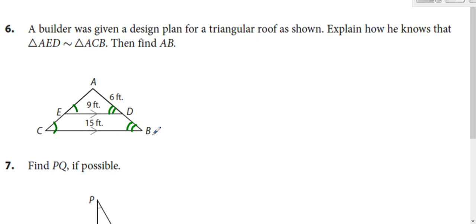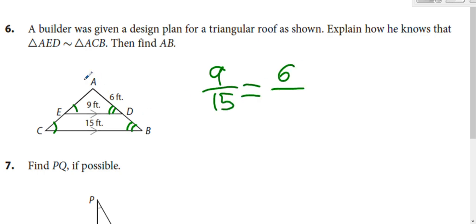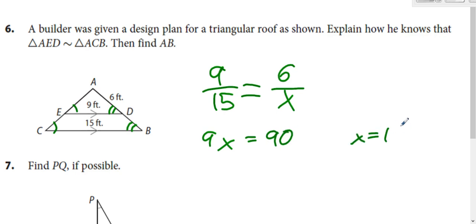Doing small triangle over big triangle with corresponding sides: 9 over 15 equals 6 over X, where X is the entire length from A to B. Cross multiplying: 9X equals 15 times 6, which is 90. So X equals 10.